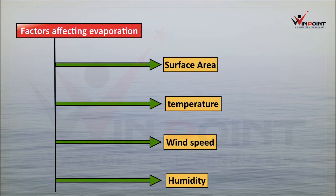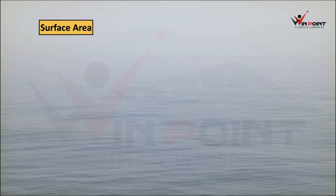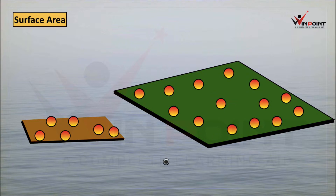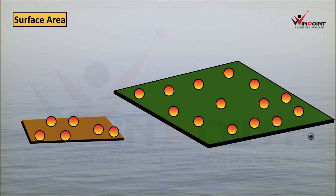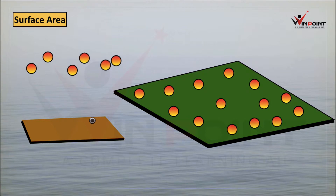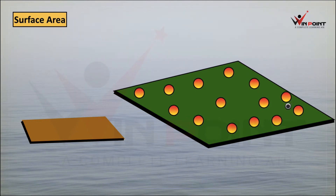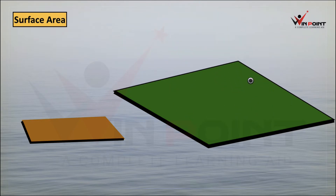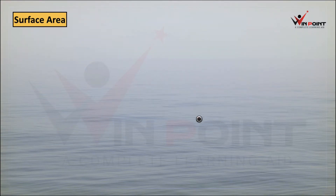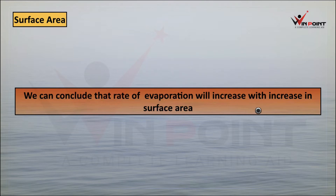Now we can discuss the role of each factor in the rate of evaporation. First, we can discuss about surface area. Let's consider two clothes. The surface area of the green cloth is more than the other cloth. We know that evaporation is a surface phenomenon, so the surface with more molecules is going to get more kinetic energy. The conversion of water into vapor will be more in the cloth with greater surface area, because more particles are converting into vapor due to more surface area. We can conclude that the rate of evaporation will increase with increase in surface area.